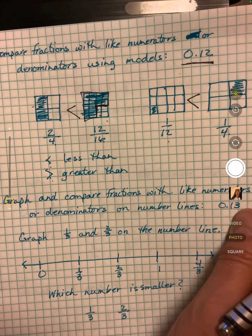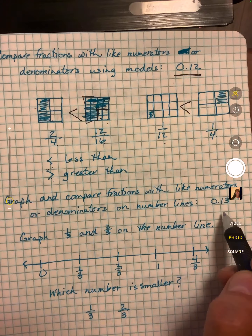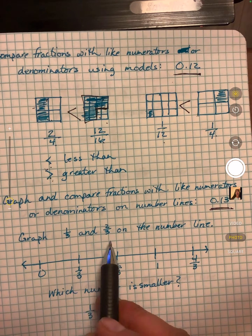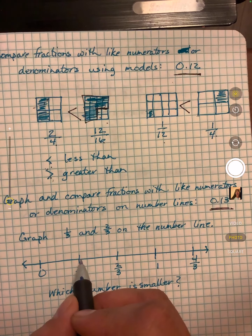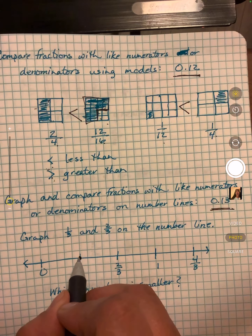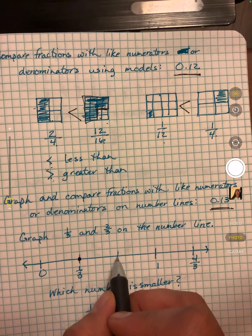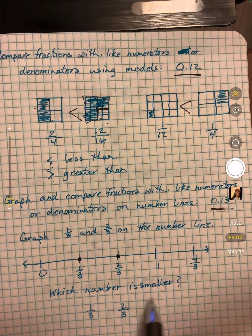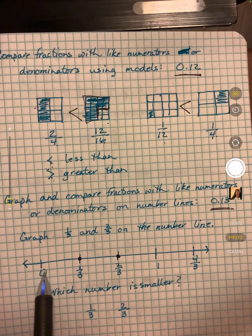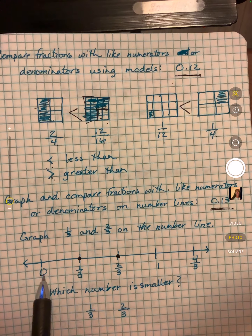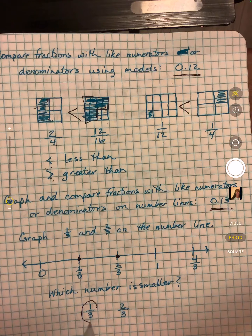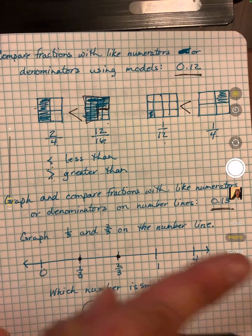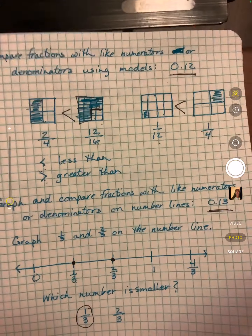Now O13 — you're on number lines. Graph 1/3 and 2/3 on the number line. To do that I put a dot here, and then we put a dot here. Which number is smaller? 1/3 is closer to zero, so 1/3 would be smaller. The farther they get this way, the bigger they get.